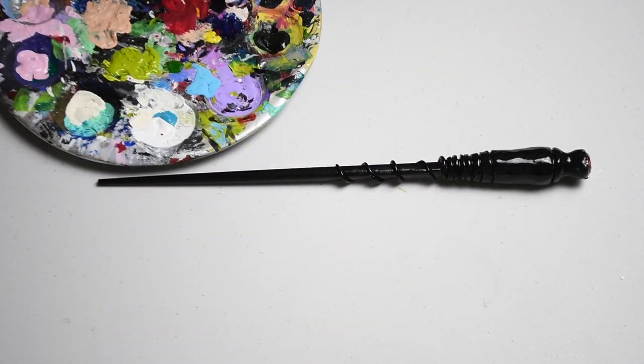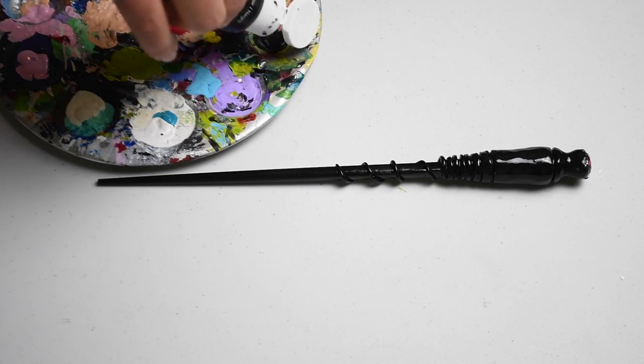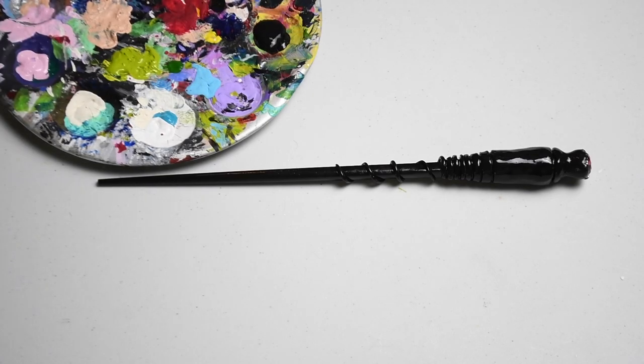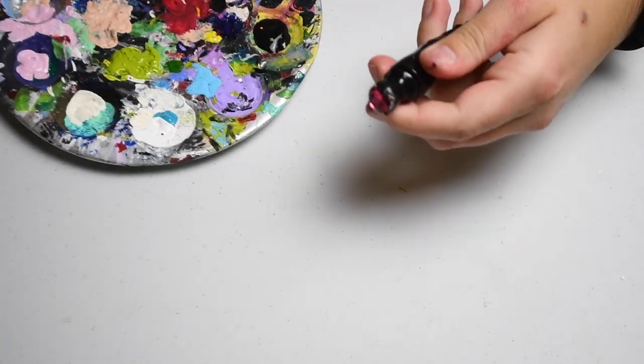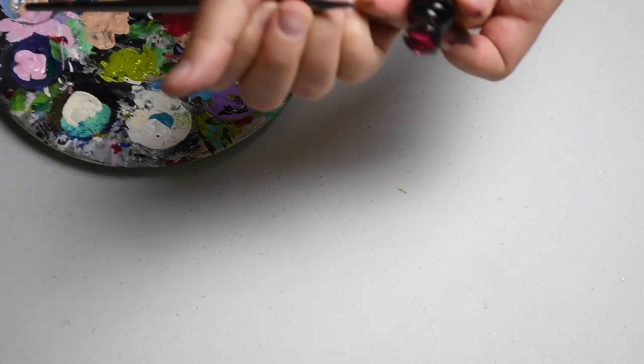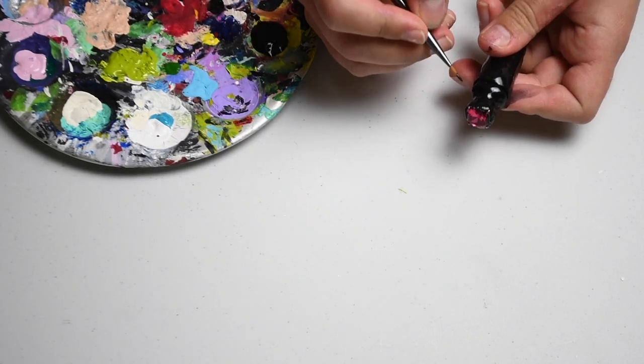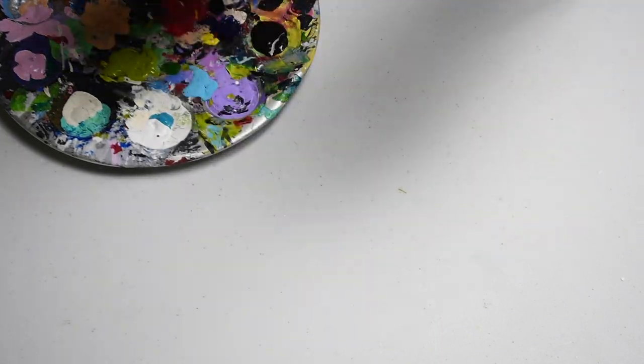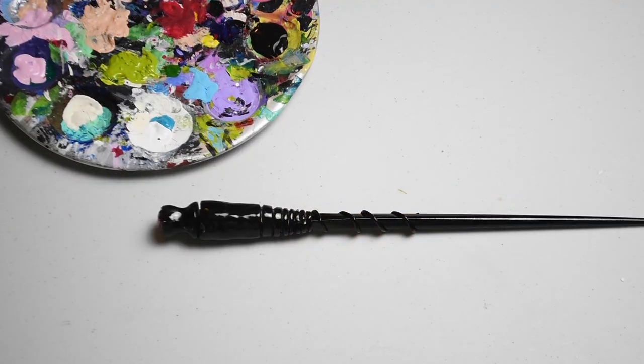So here's the black wand without any decorations giving me kind of Death Eater, Slytherin vibes right now. Actually we're going to touch up the spot by the gem because like I said we put masking tape on it so it didn't get as much coverage as some of the other places. And so there's little bits of white showing and I want to cover that up.